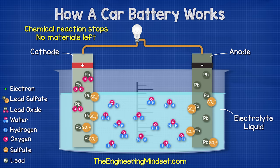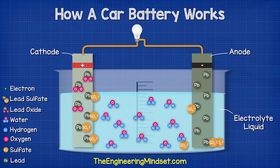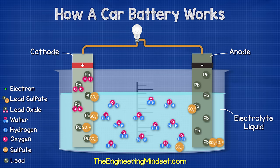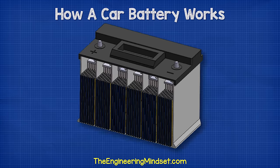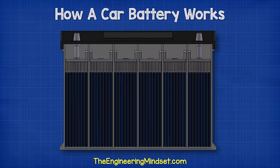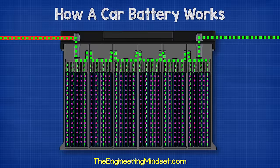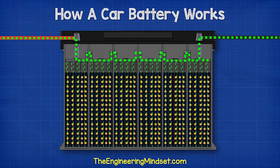Additionally, the sulfate layer could break away from the electrodes and accumulate at the bottom of the battery. This means it will no longer participate in the chemical reaction, so the battery needs to be repaired or replaced. When we look at the battery, this chemical reaction is occurring between every plate in every cell.